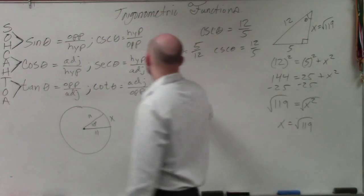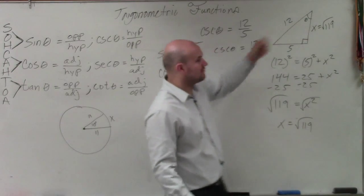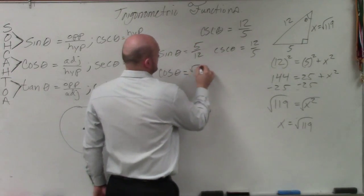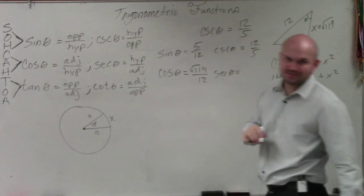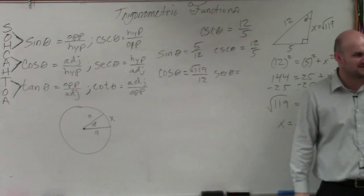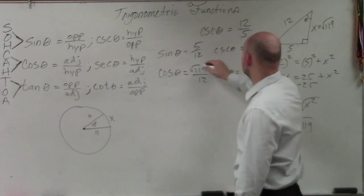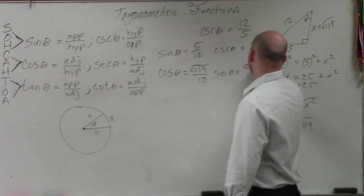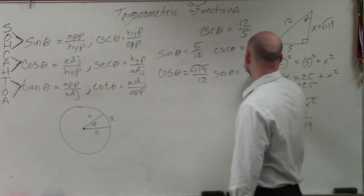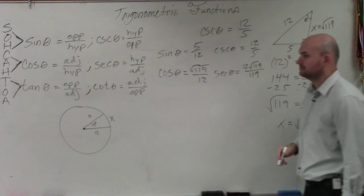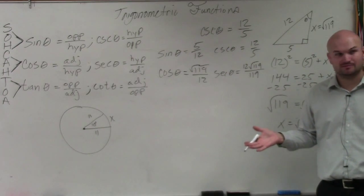Cosine of theta is adjacent over hypotenuse. And then secant of theta is going to be the reciprocal. Is it OK if I don't show my work rationalizing the denominator? It might get a little bit too fast for some of you. But that's going to be 12 square root of 119 over 119. Does anybody want me to show where I got that? Is everybody good?